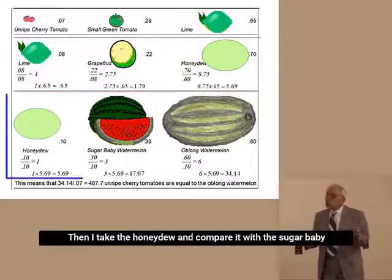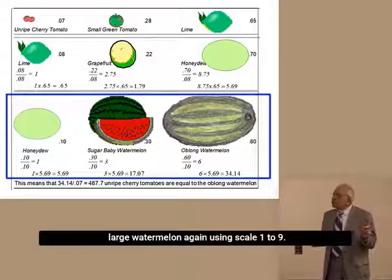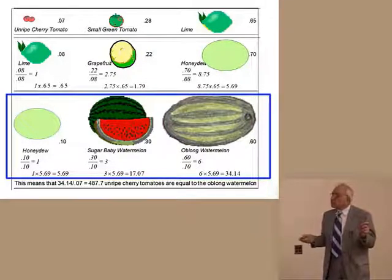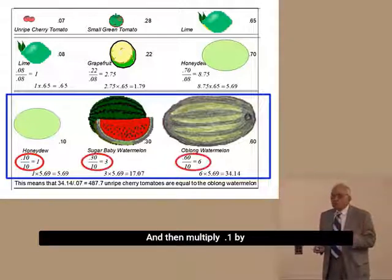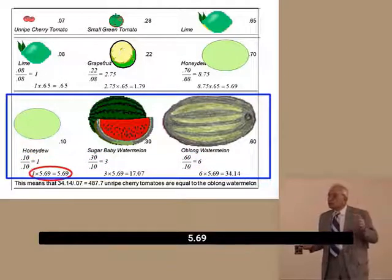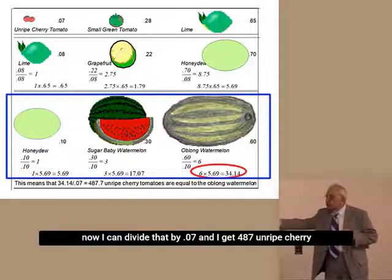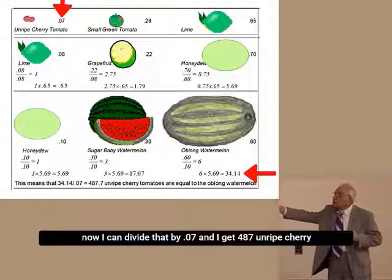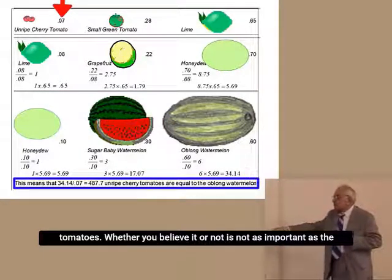Then I take the honeydew and compare it with the sugar baby watermelon, large watermelon, again using scale 1 to 9. And then again, I divide by the 0.1 so it gets a 1 and the others appropriately. And then multiply the 1 by 5.69. And so when I multiply this, the watermelon comes 34.14. Now I can divide that by 0.07 and I get 487 unripe cherry tomatoes.